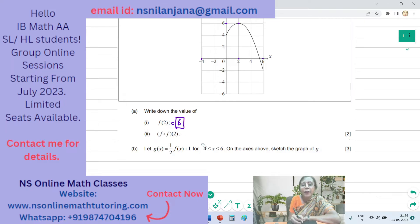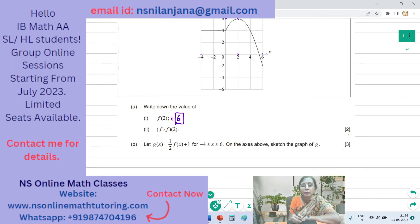Next is F of F of 2. This is a composite function, this can be written as F of F of 2. And what is F of 2? It is 6. So this is F of 6.